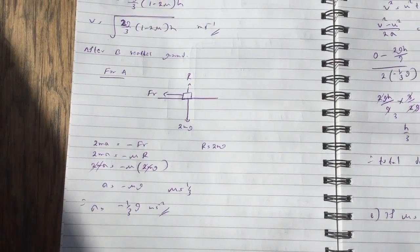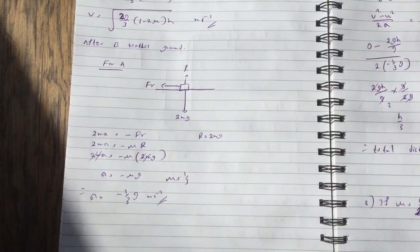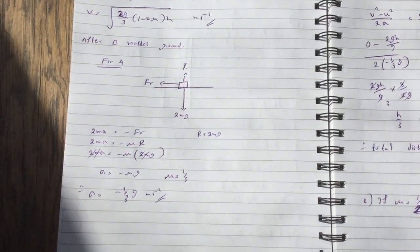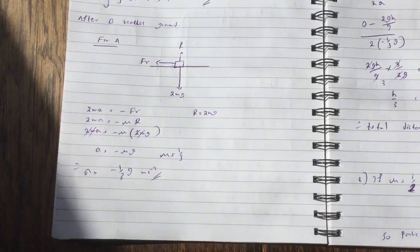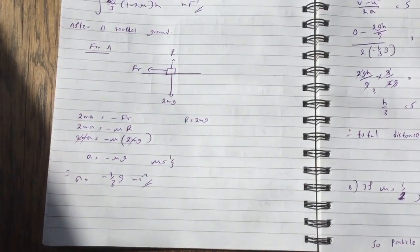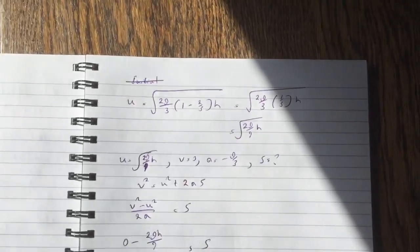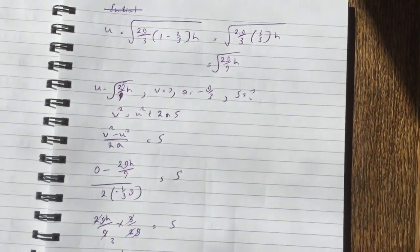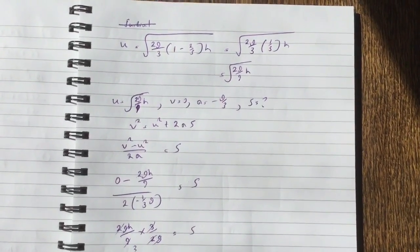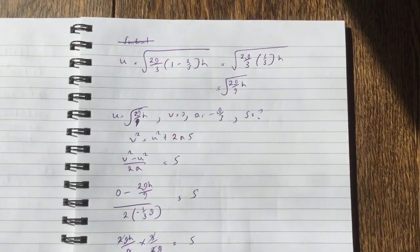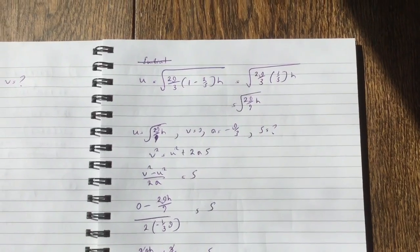So 2ma equals minus friction because minus friction is the only force acting on it. And vertically, R equals mg. Now 2ma equals minus mu R. So 2ma equals minus mu 2mg. So the 2m cancels. So acceleration equals minus mu g. So mu is equal to one third. So acceleration equals minus one third g meters per second squared.